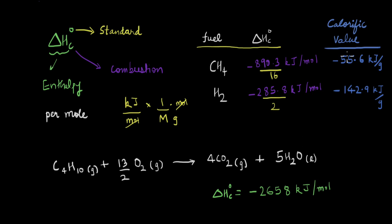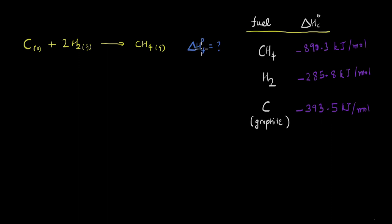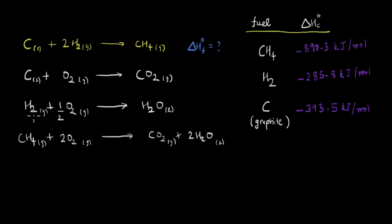Apart from calculating calorific value, there is one more way these standard enthalpy of combustion values are useful. Let's say we want to calculate the standard enthalpy of formation of methane, which is formed by combining carbon (graphite) and hydrogen. Instead of calculating this directly, we can use standard enthalpies of combustion. For graphite, hydrogen, and methane, we know the combustion reactions — carbon, hydrogen, and methane each combust to give carbon dioxide and water. We can rearrange these combustion reactions to obtain the formation reaction using Hess's law.